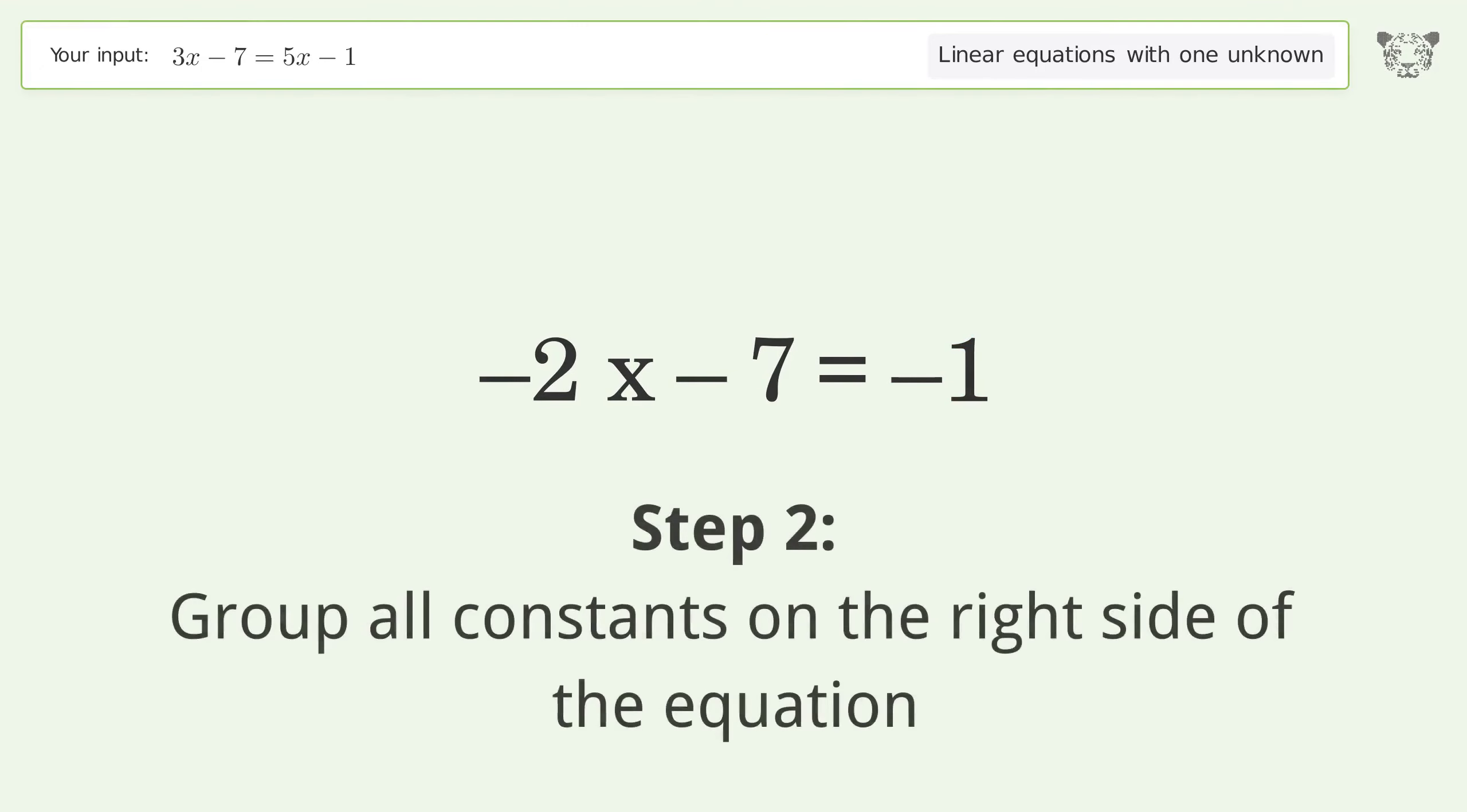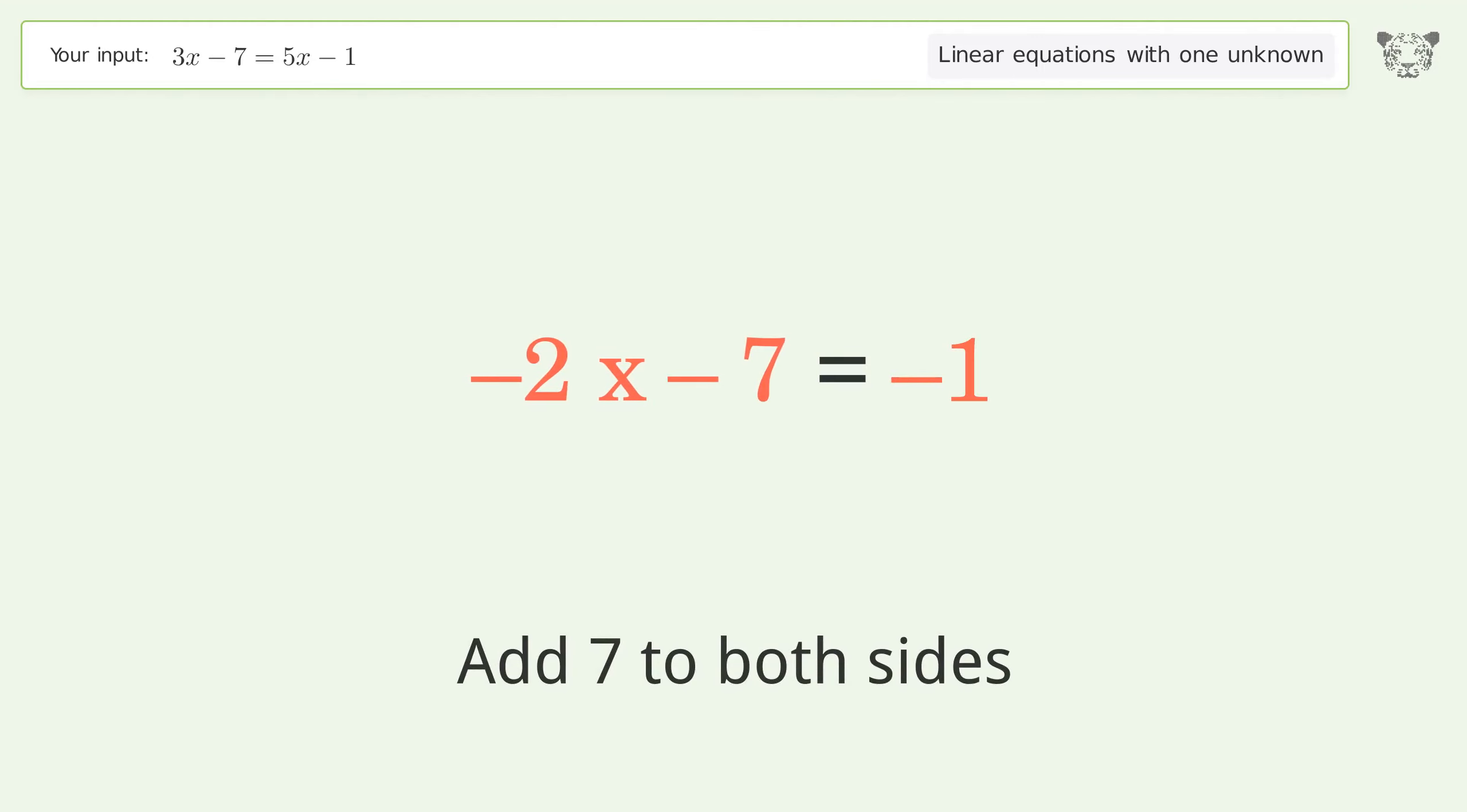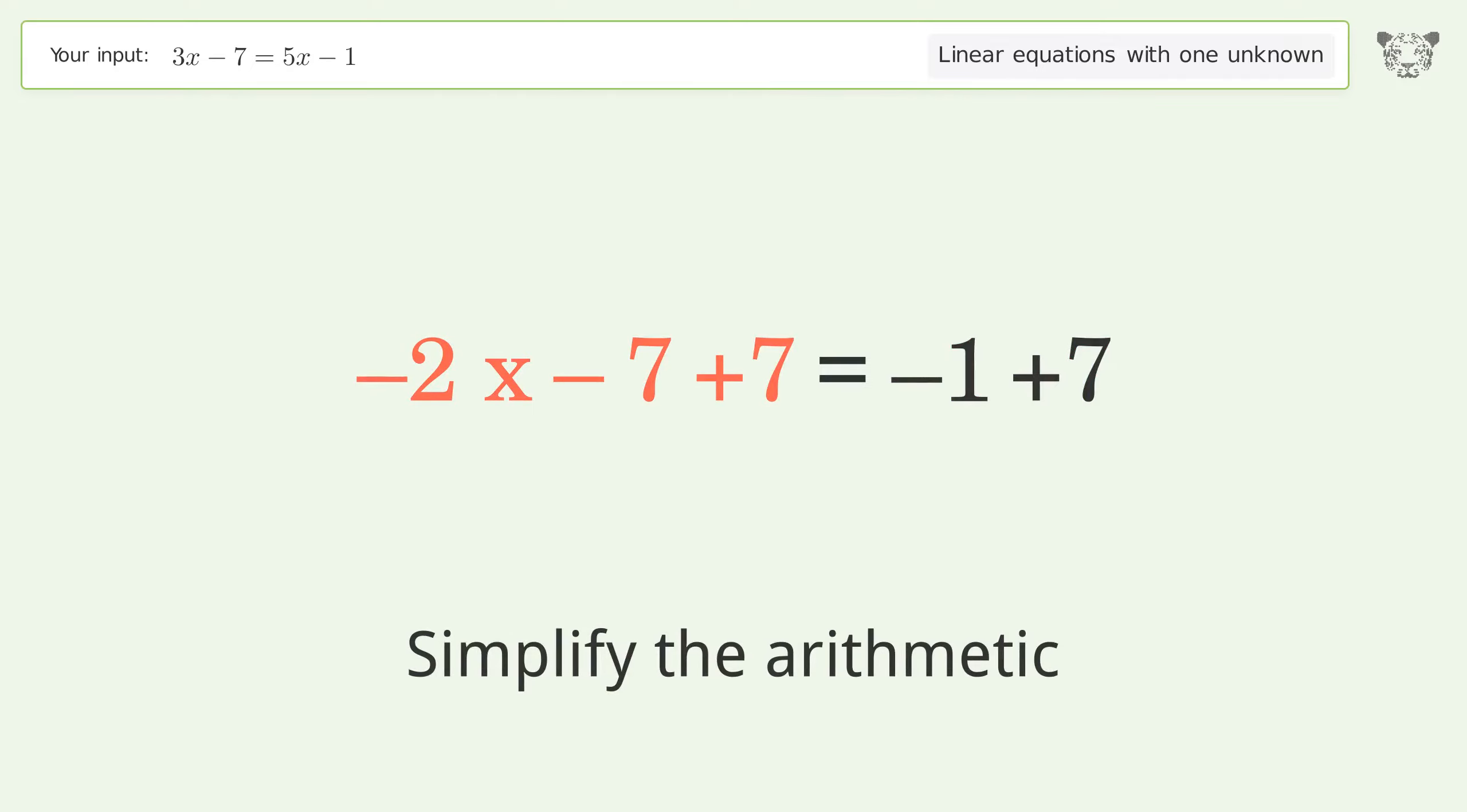Group all constants on the right side of the equation. Add 7 to both sides. Simplify the arithmetic.